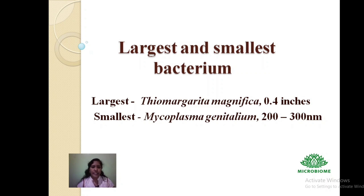Regarding the largest and smallest bacterium: previously the largest bacterium was Thiomargarita namibiensis, but now it is Thiomargarita magnifica at 0.4 inches, discovered by Oliver Gross clinging to sunken mangrove leaves in the Guadeloupe archipelago in 2009. It is a magnificent sulfur pearl. The smallest bacterium is Mycoplasma genitalium, with a size range of 200 to 300 nanometers.